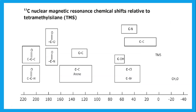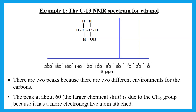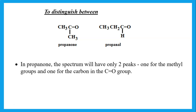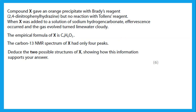The carbon-13 NMR shifts are referenced to tetramethylsilane. For ethanol, carbon-13 NMR gives only two peaks because there are two different carbon environments. To distinguish between propanone and propanal: propanone is symmetrical, so we get only two peaks (one for the equivalent methyl groups, one for C=O). But in propanal, all three carbons are different, so we get three peaks in the carbon-13 NMR.